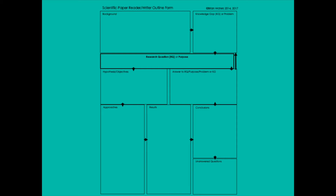The form starts in the upper left corner with the background, and then just follow the arrows. Once you write a few bullet points about the key background points you need to present, those are going to lead to the knowledge gap or the problem to be solved. That's going to lead to the research question or the purpose statement for the study, which is in a bold box because that's really the heart of the paper.